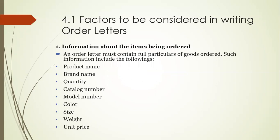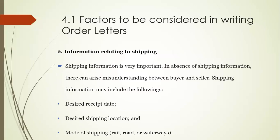The first factor to include in an order letter is information about the items being ordered — product name, brand name, quantity, catalog number, model number, color, size, weight, and unit price. All these details should be clearly written. Second, information relating to shipping: desired receipt date, desired shipping location, and mode of shipping — whether by rail, road, or waterways.